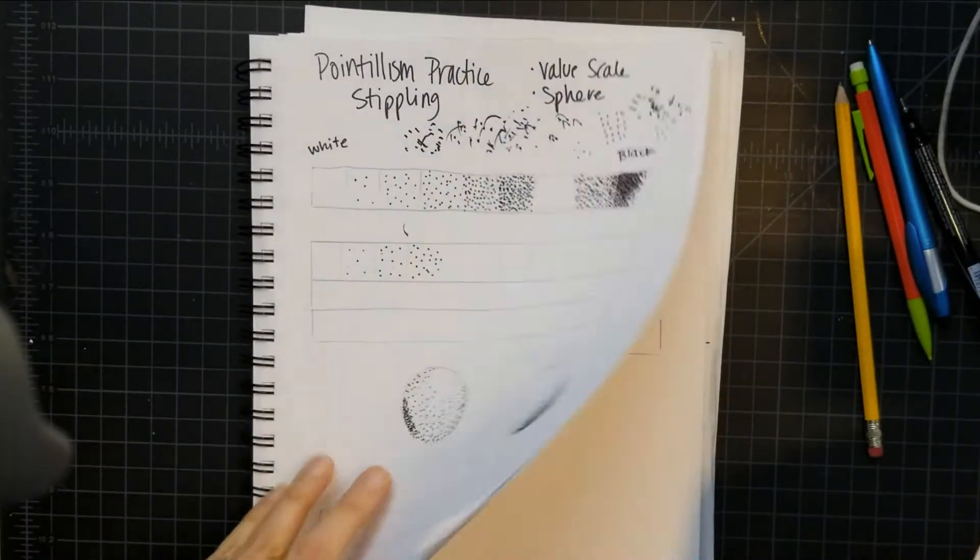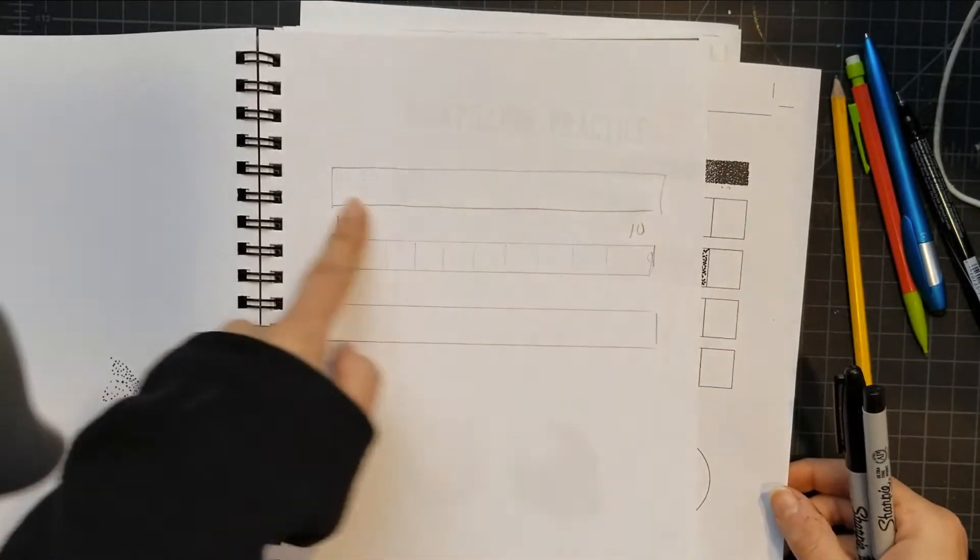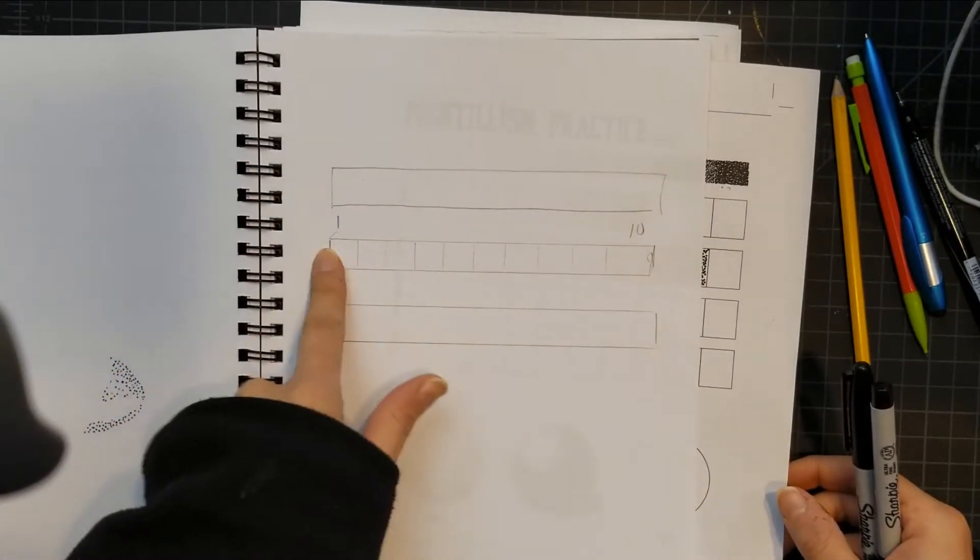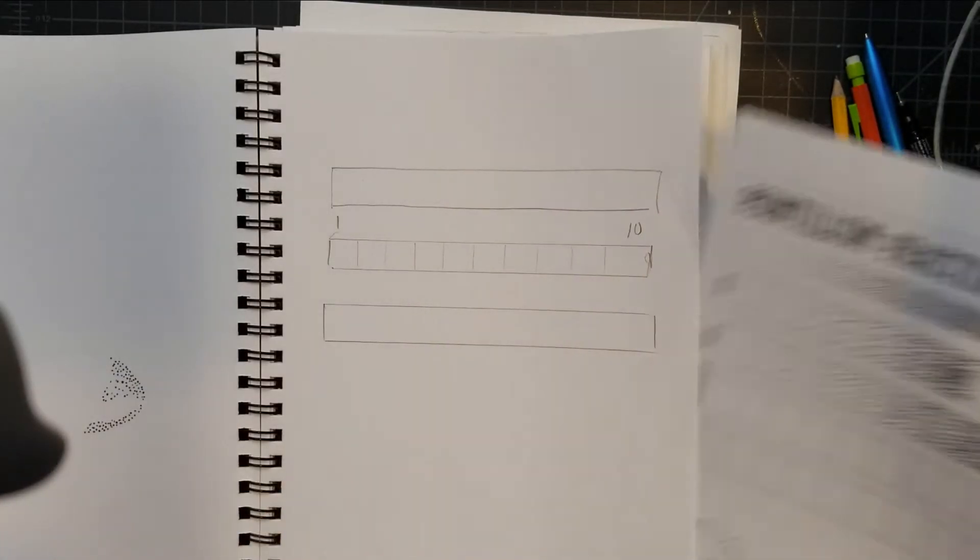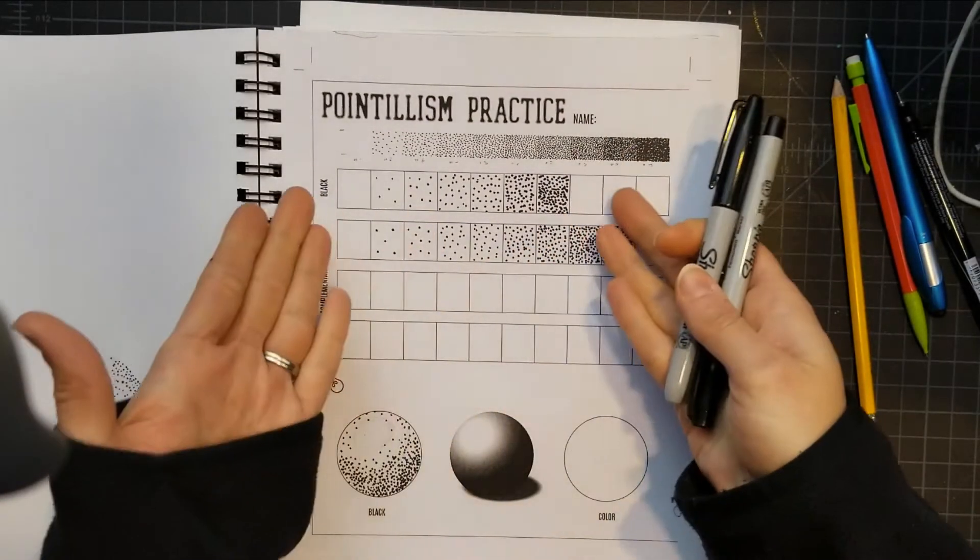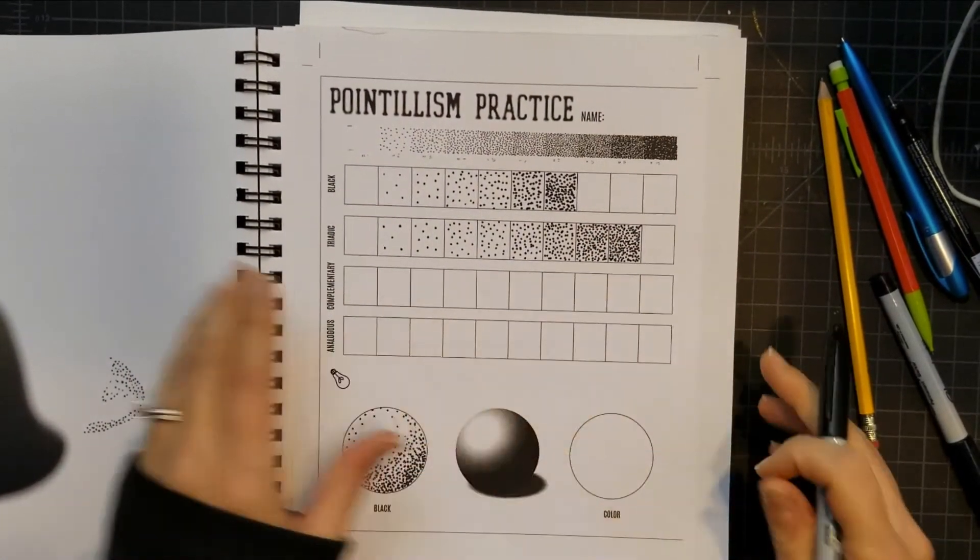So we want to grab a sheet in our sketchbook. I just freehand drew a rectangle. I used a little ruler here. You can also trace the worksheet or do the dots on the actual worksheet. So I'm going to demonstrate here.